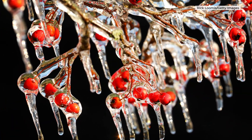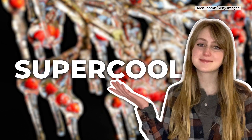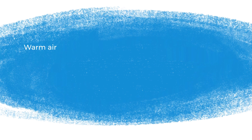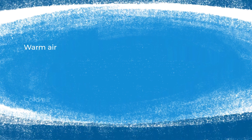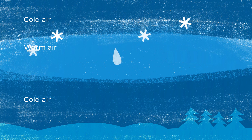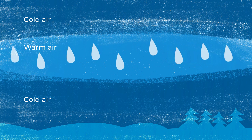That's because of a phenomenon called supercooling — I told you it was supercool. To start, you need a layer of warm air sandwiched between layers of cold air. The rain may start as snow from above that melts as it enters the warm layer, or the warm layer may be carrying its own moisture that falls as rain.